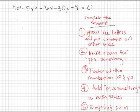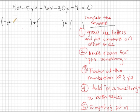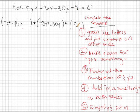Step number one to completing the square is we have to group like letters and put our numbers on the other side. Letters like to be with their own kind, and numbers hang out on the right-hand side. So we're going to give them their own little groups: one for the X's, one for the Y's, and one for the numbers. So we have 4X squared minus 16X, plus negative 5Y squared minus 30Y, and adding 9 to both sides gives a positive 9 on the right-hand side. Step number one is done.